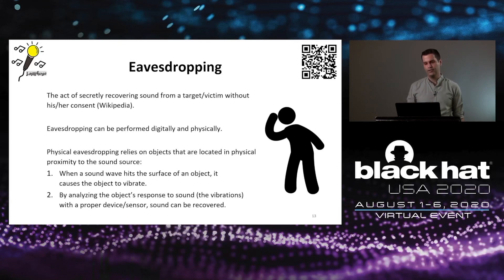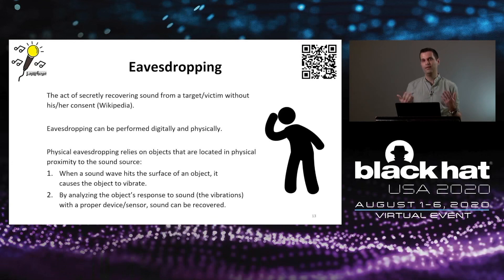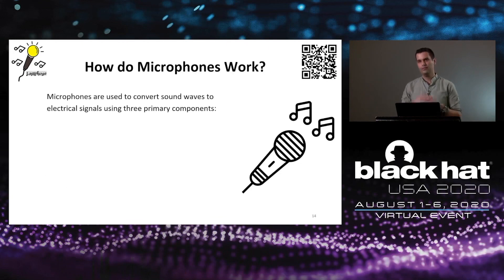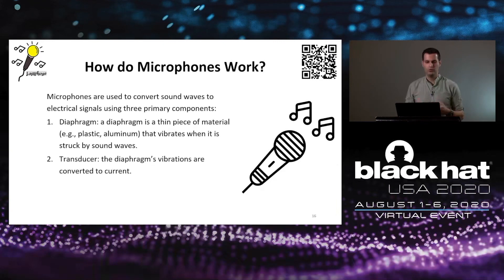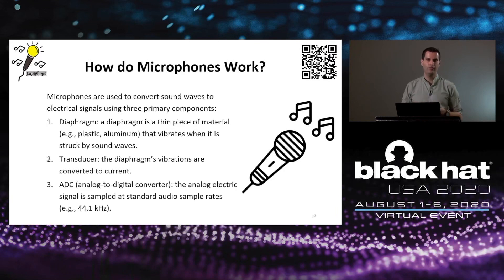Physical eavesdropping relies on objects located in physical proximity to the sound source. When a sound wave hits the surface of an object, it causes the object to vibrate, and by analyzing those vibrations with a proper sensor, sound can be recovered. This principle is used by microphones, which convert sound waves to electrical signals using three primary components: a diaphragm — a thin piece of material that vibrates when struck by sound waves; a transducer, which converts vibrations to current; and an A-to-D converter, which digitizes the analog electrical signal to audio.